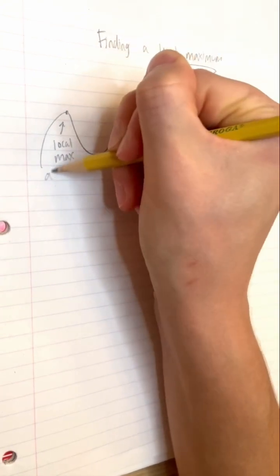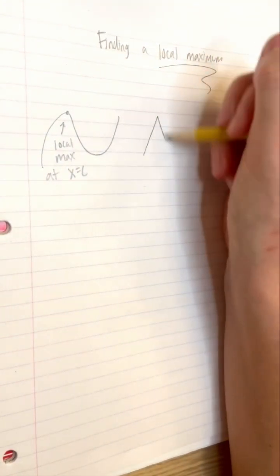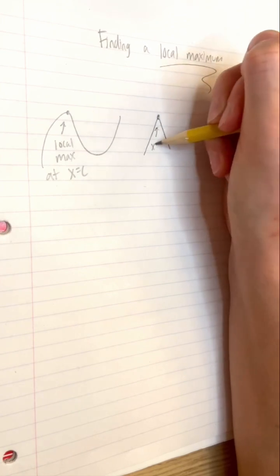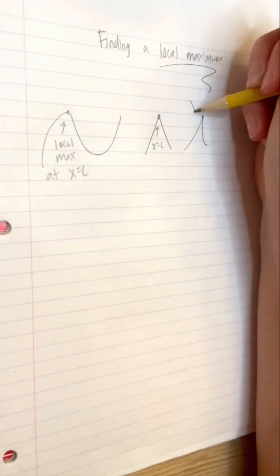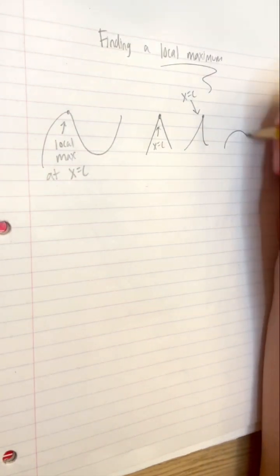Let's call its x-coordinate c. We can imagine this as the top of a hill, but a local maximum could be at a corner, cusp, or even as a removable discontinuity as shown here.